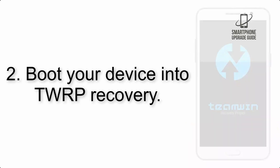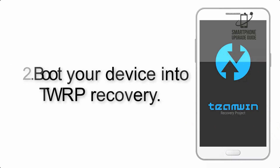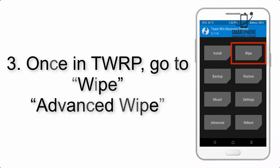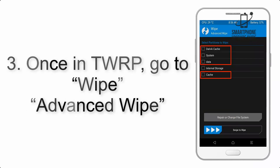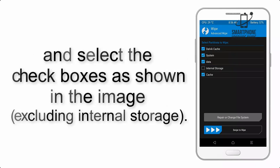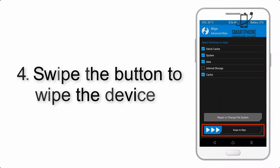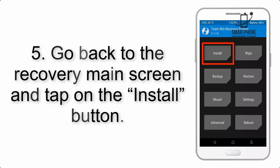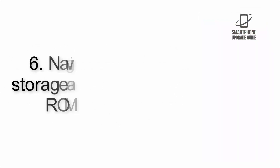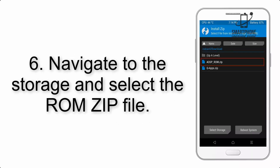Step 2: Boot your device into TWRP recovery. Once in TWRP, click on Wipe, then Advanced Wipe, and select the checkboxes as shown in the image, excluding internal storage. Step 4: Swipe the button to wipe the device.